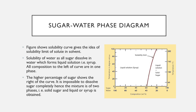The sugar-water phase diagram: the solubility curve gives the idea of the solubility limit of solute in solvent. When all sugar dissolves in water, a liquid solution (syrup) is formed — all compositions to the left of the curve are in one phase. At higher sugar percentages to the right of the curve, it is impossible to dissolve sugar completely, so the mixture is two phases: solid sugar plus liquid syrup. The x-axis indicates percentage of sugar (left to right) and percentage of water (right to left), totaling 100%.